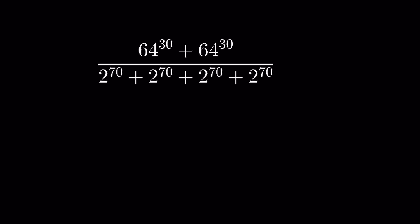We have to evaluate: 64 to the power 30 plus 64 to the power 30, upon 2 to the power 70 plus 2 to the power 70 plus 2 to the power 70 plus 2 to the power 70 — without using a calculator. So let's try.